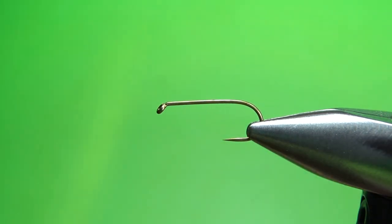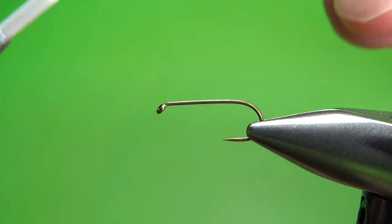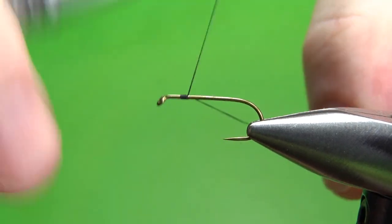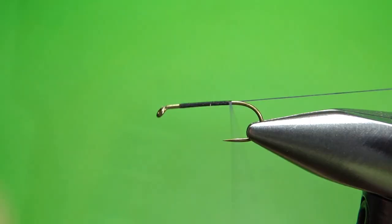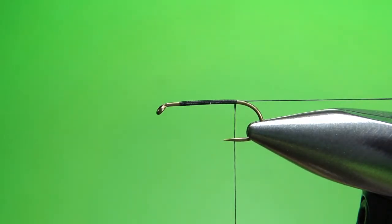I'm going to put down a base of black 70 denier UTC and leave a pretty long tag. It's going to be our rib, so pull a little bit extra out before you wrap this on. Take it all the way back to the bend. I'm going to park this tag under my magnet here and tie in the tail.